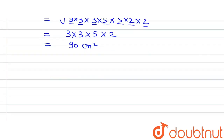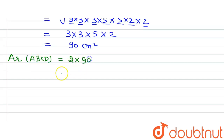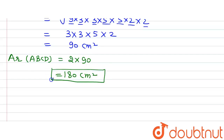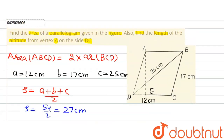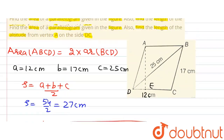Now we find the area of parallelogram ABCD, which equals 2 times the area of triangle BCD. So area of ABCD = 2 × 90 = 180 cm². This is the answer to the first part of the question.